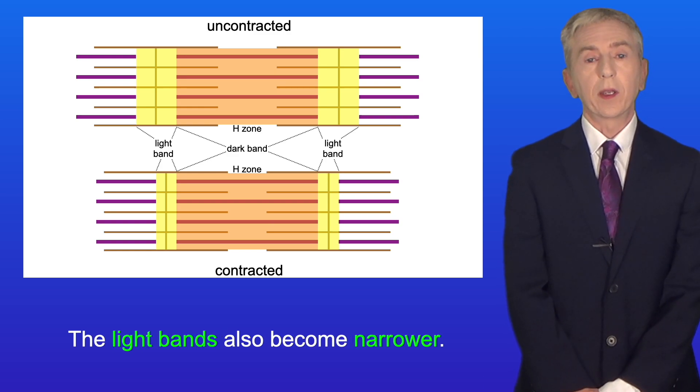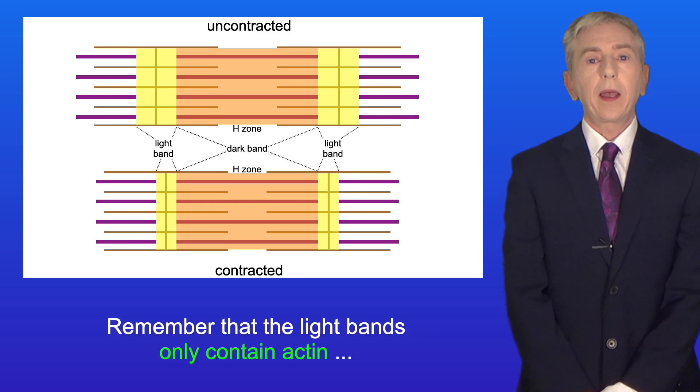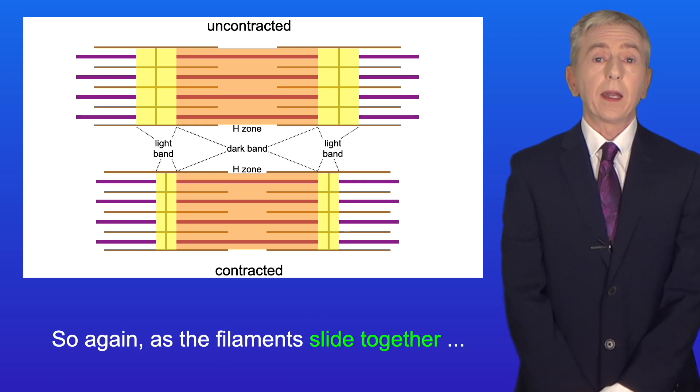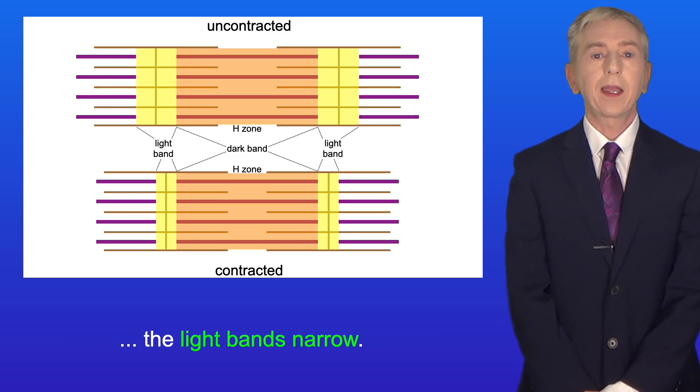The light bands also become narrower. Remember that the light bands only contain actin with no overlapping myosin. So again as the filaments slide together the light bands narrow.